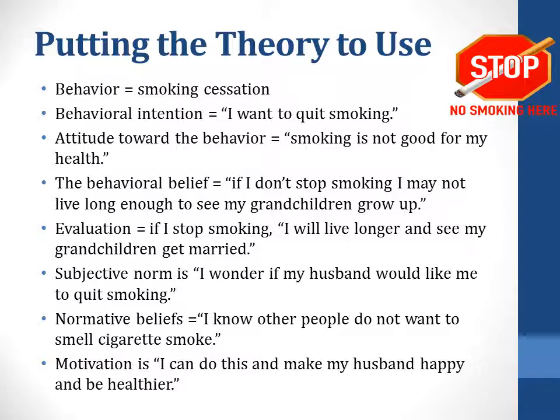So let's put this theory to use now. Let's talk about smoking cessation. The behavior is smoking cessation. The behavioral intention is: I want to quit smoking. The attitude toward the behavior is: smoking is not good for my health. The behavioral belief is: if I don't stop smoking, I may not live long enough to see my grandchildren grow up. The subjective norm is: I wonder if my husband would like me to quit smoking. The normative beliefs are: I know other people do not want to smell cigarette smoke on me. The motivation is: I can do this and make my husband happy and be healthier.